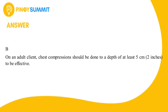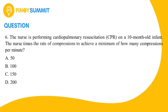Number six: The nurse is performing cardiopulmonary resuscitation (CPR) on a 10-month-old infant. The nurse times the rate of compressions to achieve a minimum of how many compressions per minute? A) 50, B) 100, C) 150, D) 200.